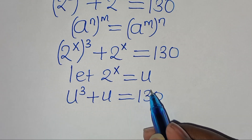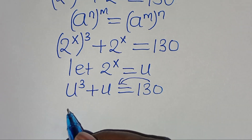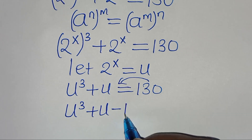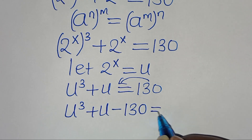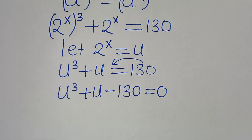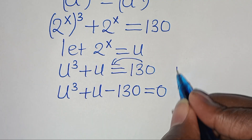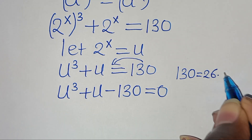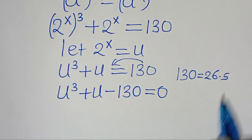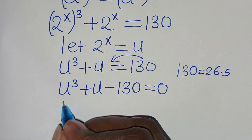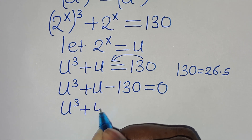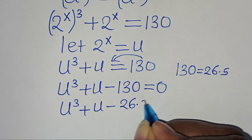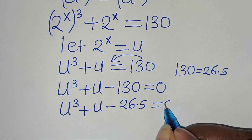Let's take 130 to the left-hand side, so that we have u to the power of 3 plus u minus 130, equal to 0. We can express 130 as 26 multiplied by 5, so we have u cubed plus u minus 26 times 5, equal to 0.